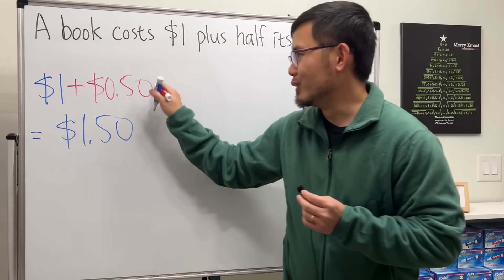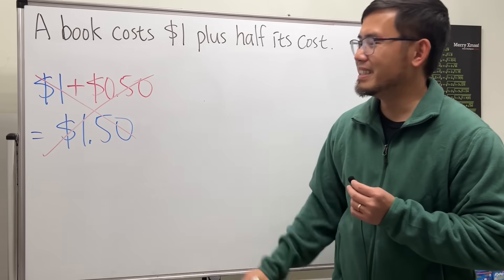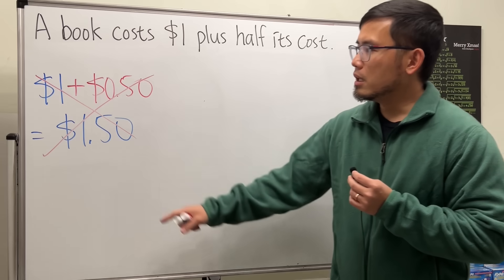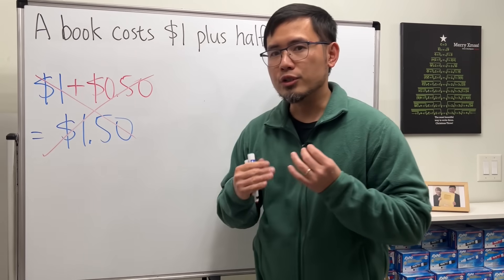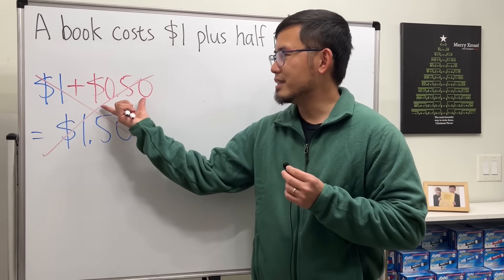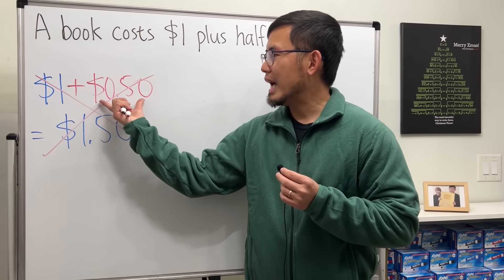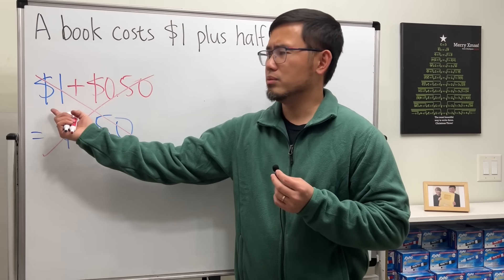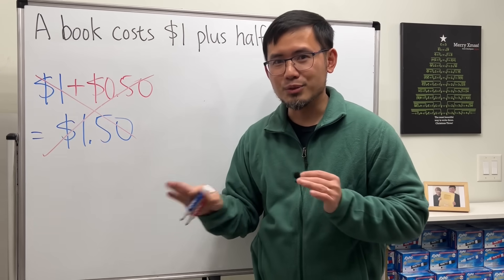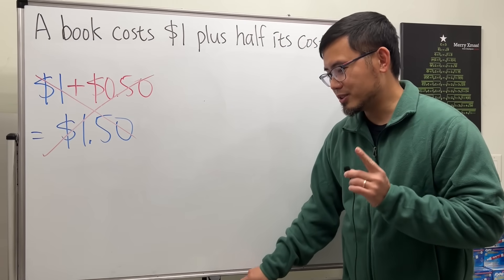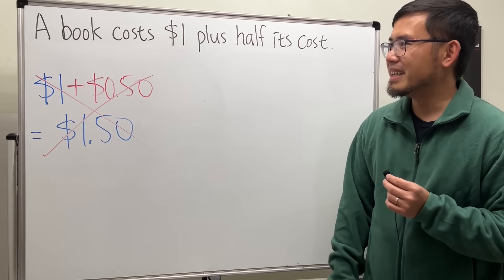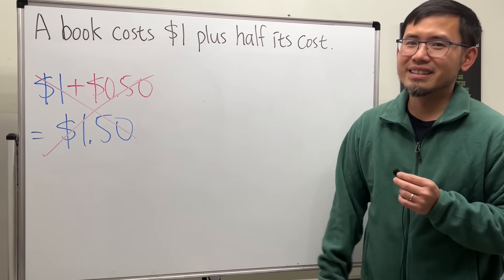No, this is not correct. Why? Because we don't know how much the book costs. The moment you put down $1, you're assuming the book costs $1 already. That's why you did the plus 50 cents, right? Half of its price. So it should have been $1, but you're saying that's $1.50. That's wrong. We don't know how much the book costs, so that is not valid.